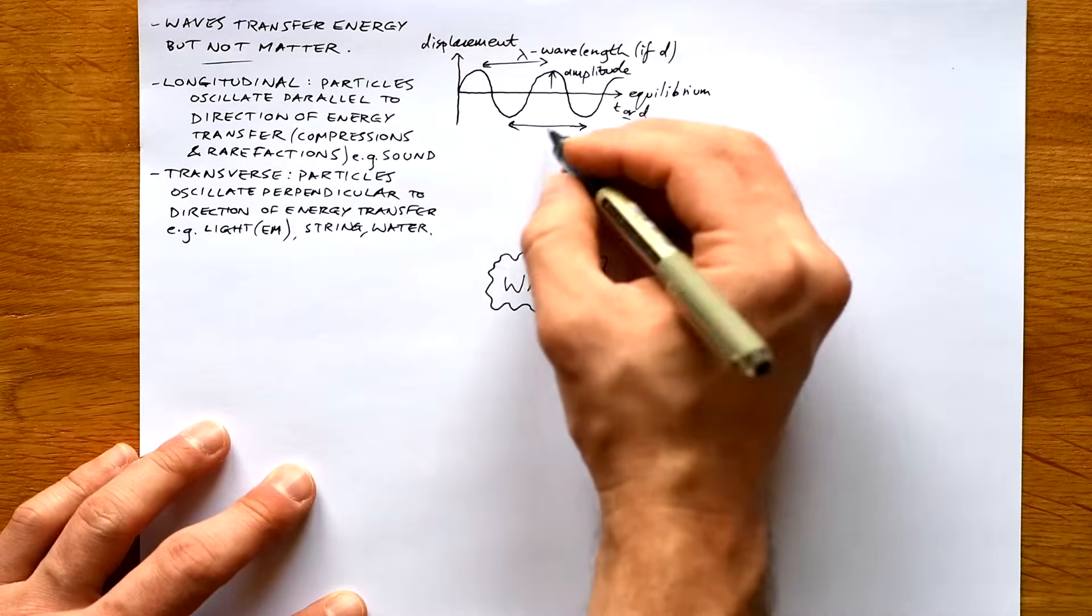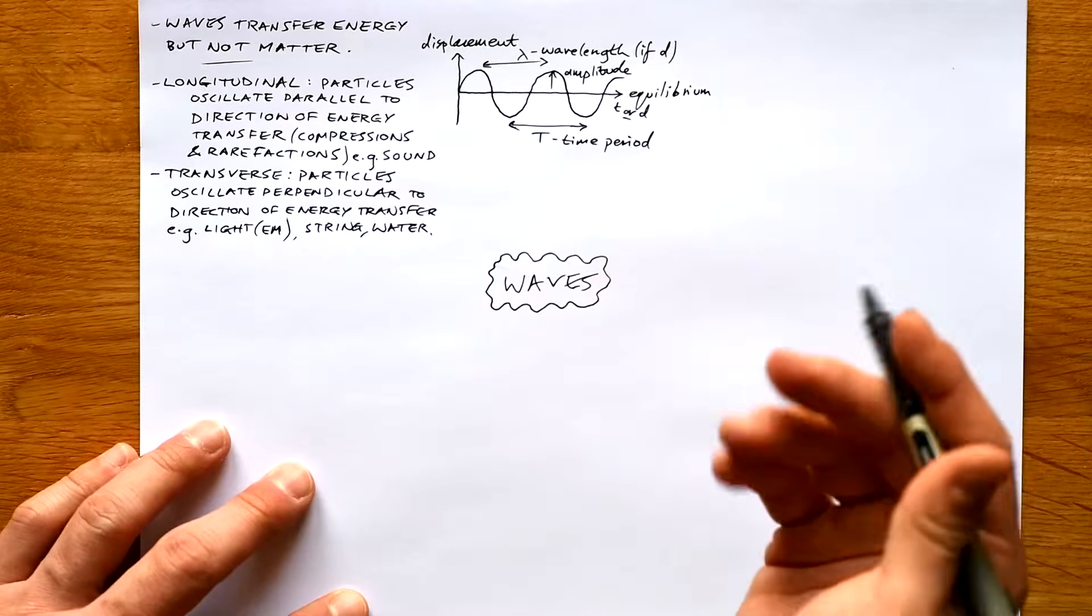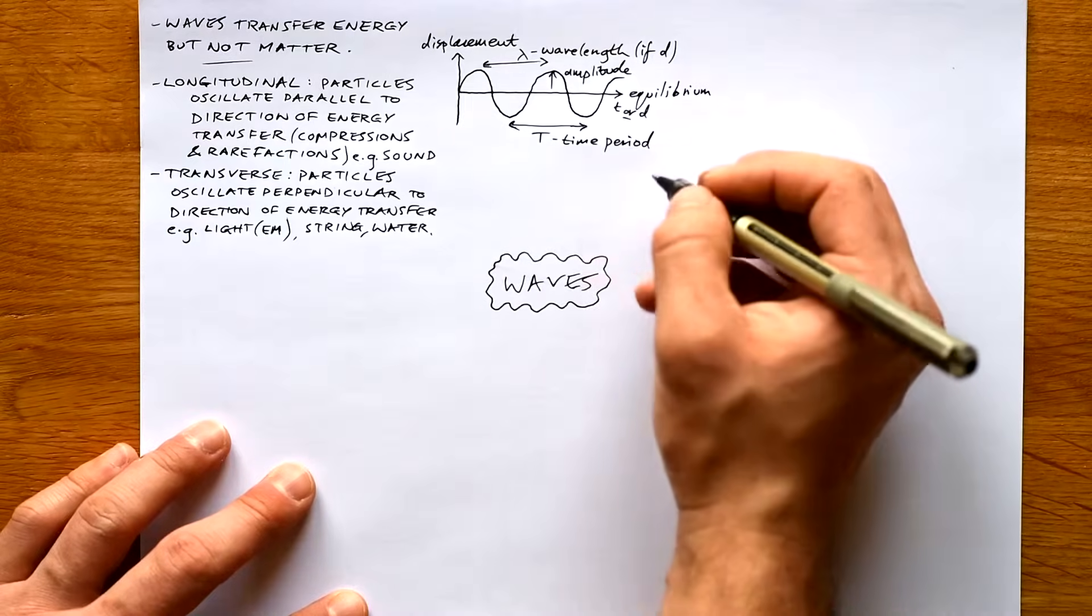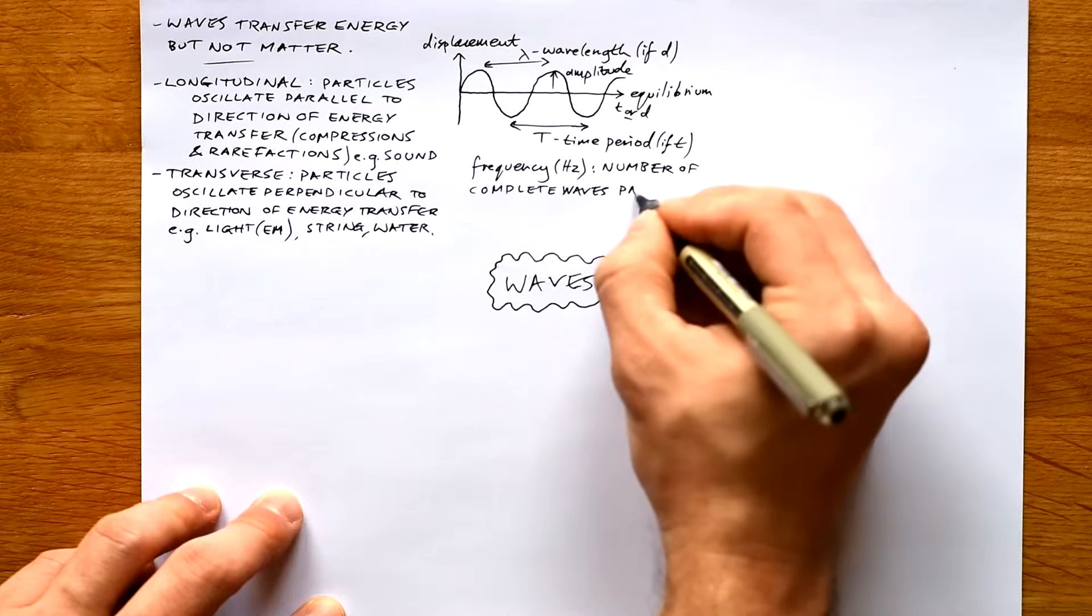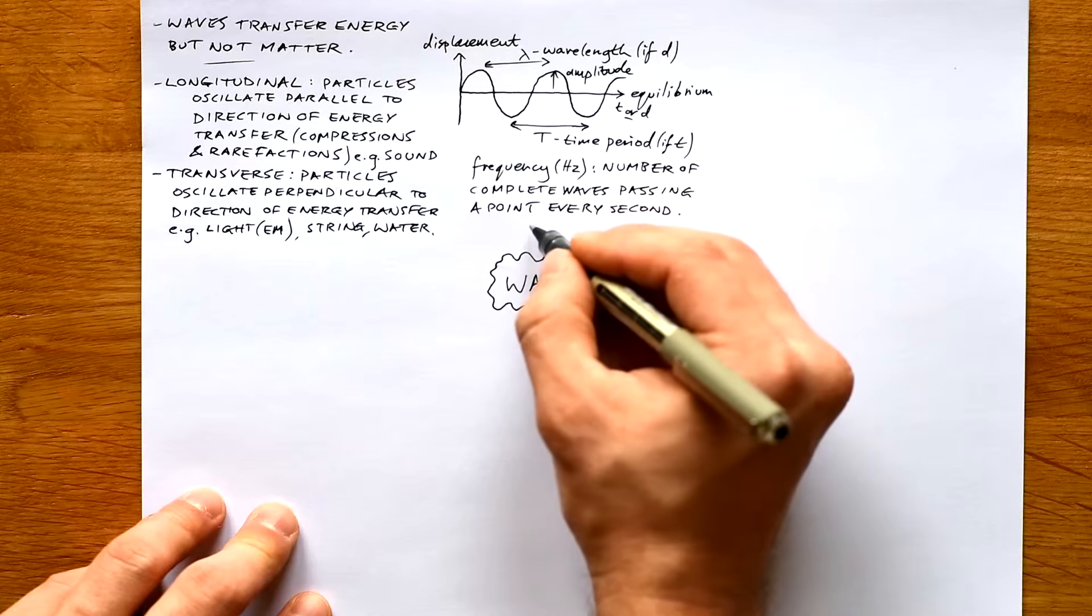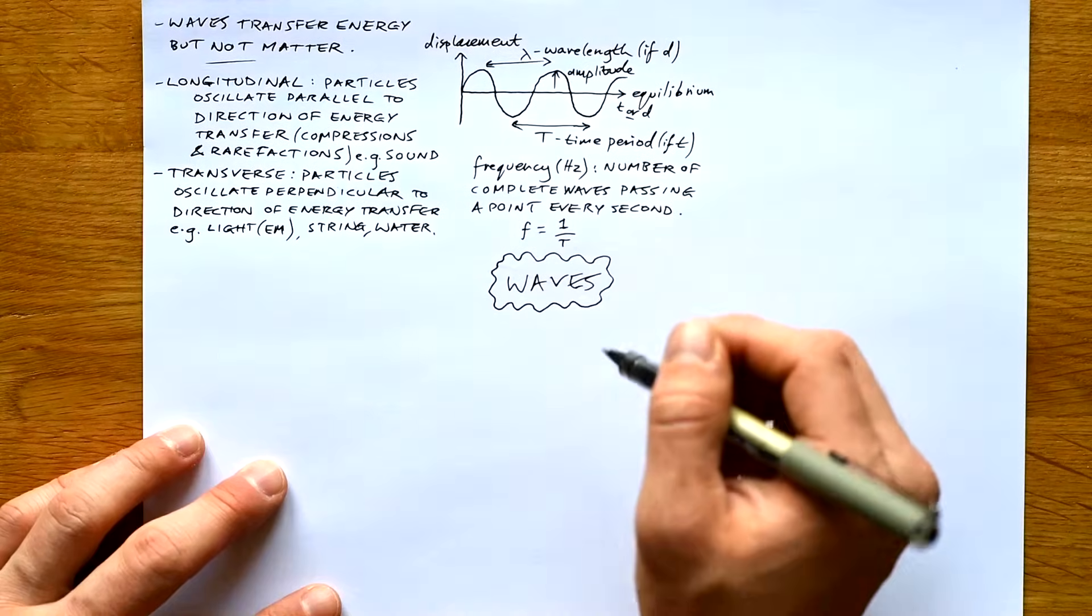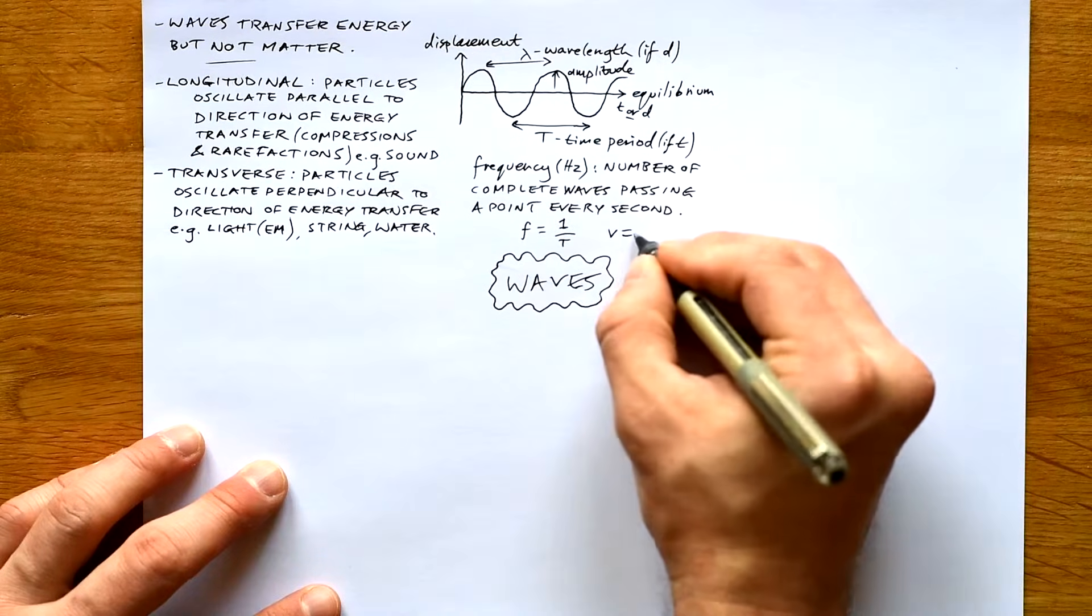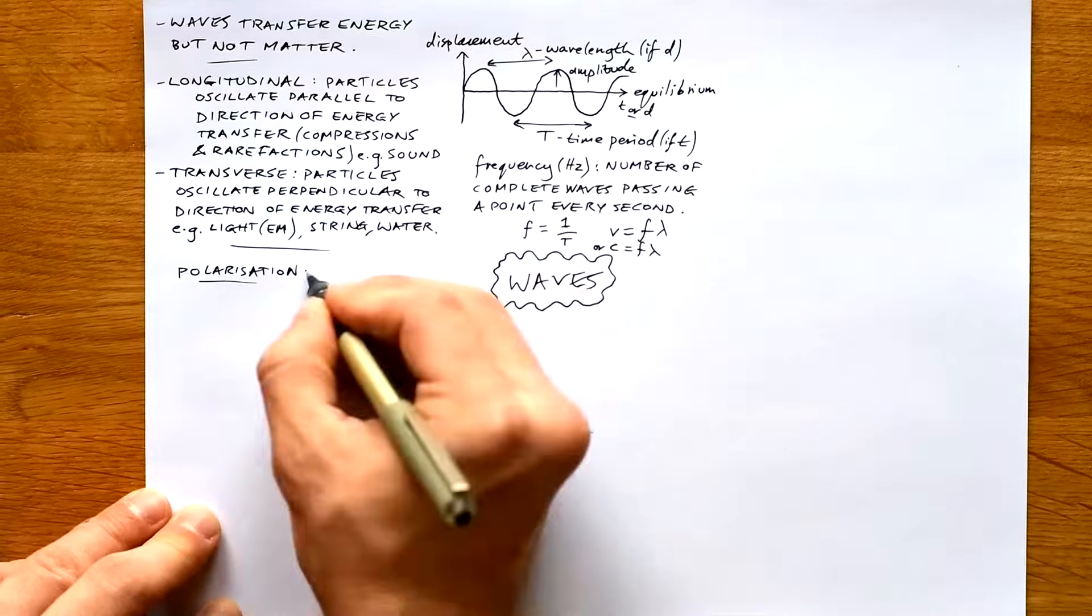Time period is the time taken for one complete wave to pass a point, measured in seconds. Frequency is the number of complete waves passing a point every second. So if you want to find the frequency, we just do one divided by the time period. Our other equation is v equals f lambda, that's wave speed equals frequency times wavelength.